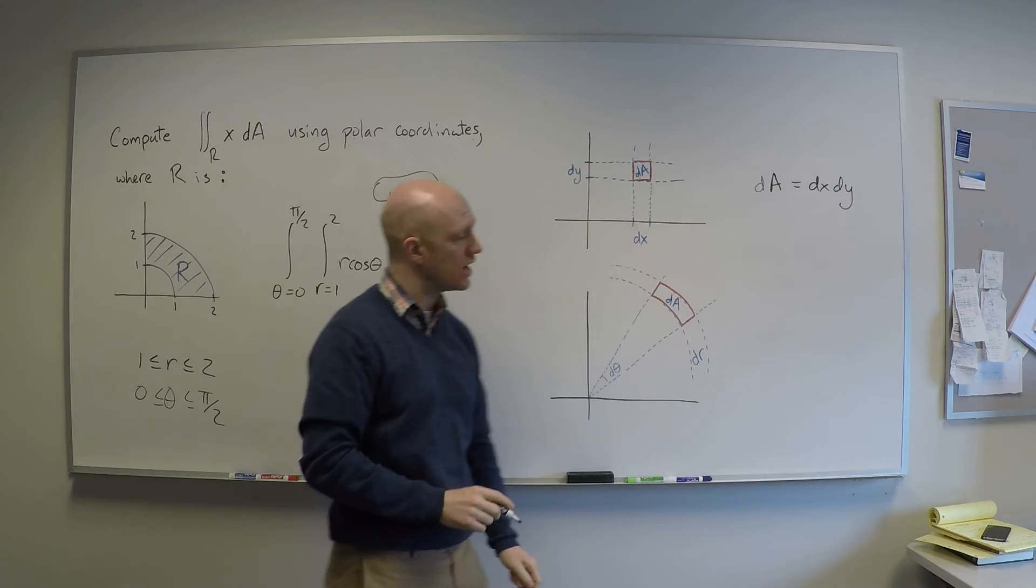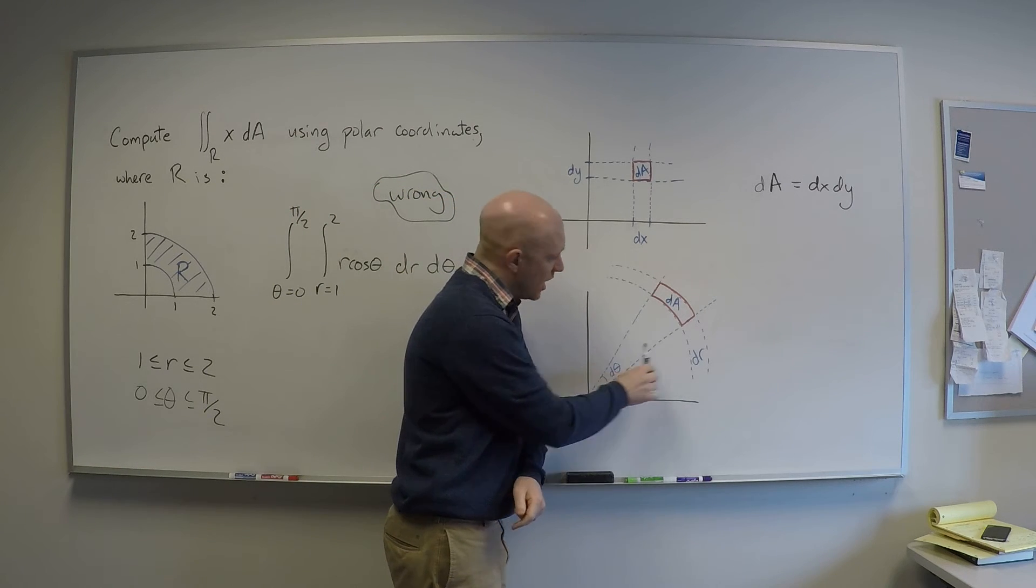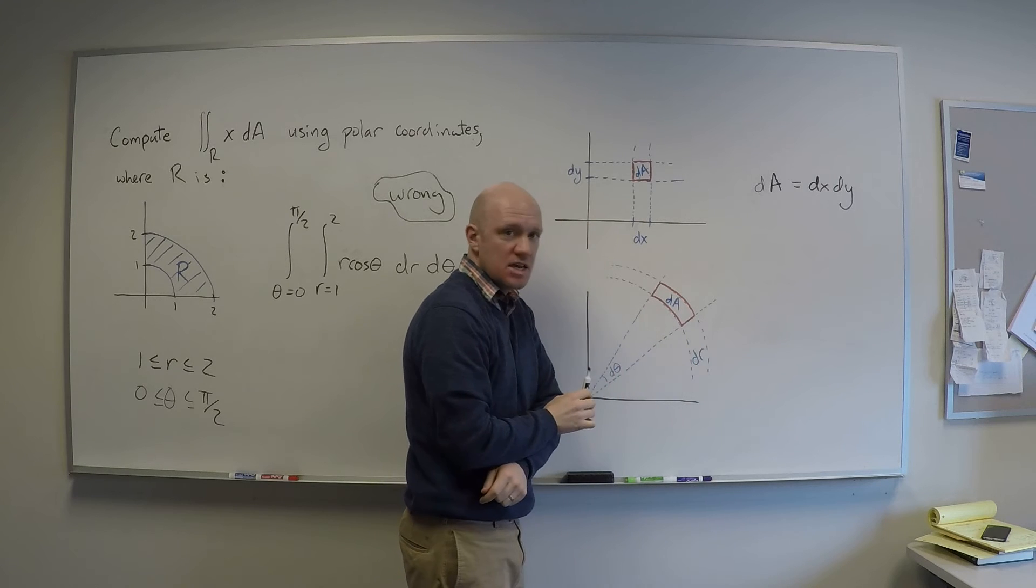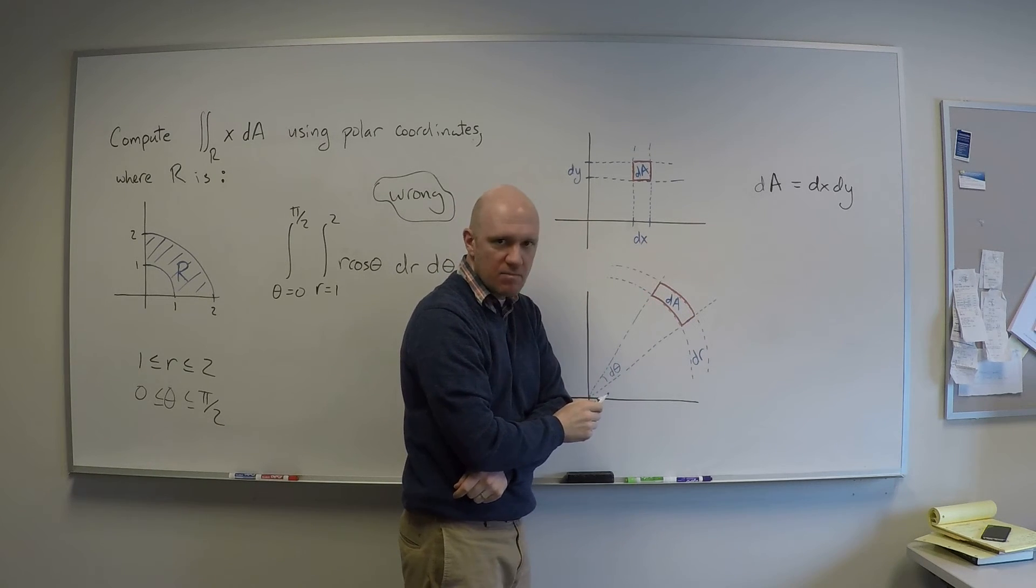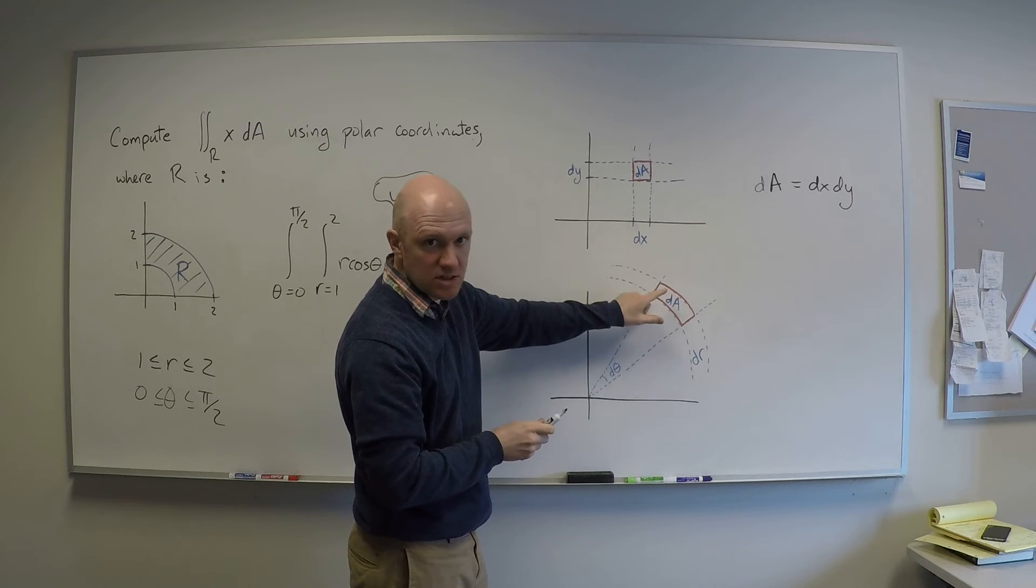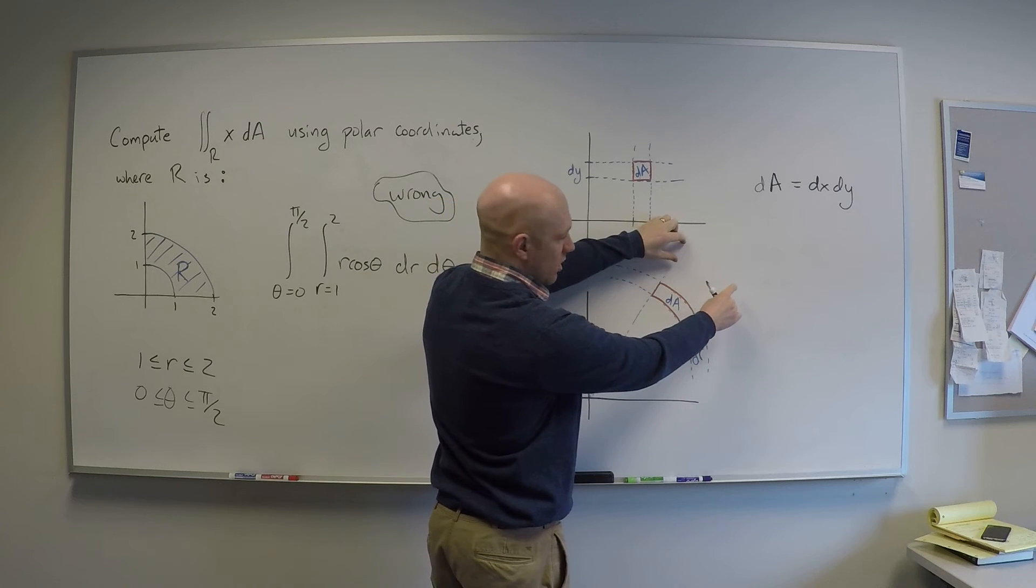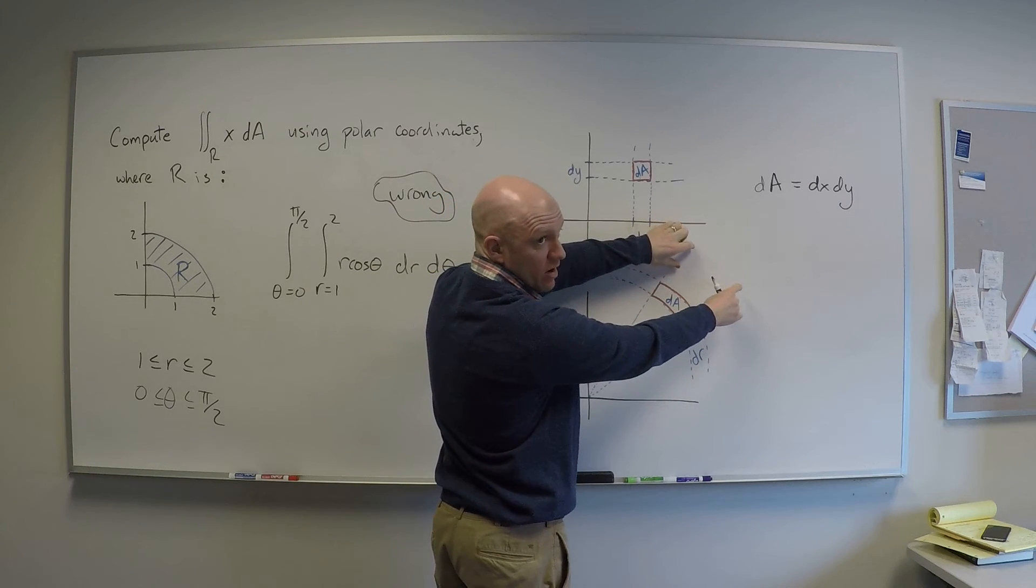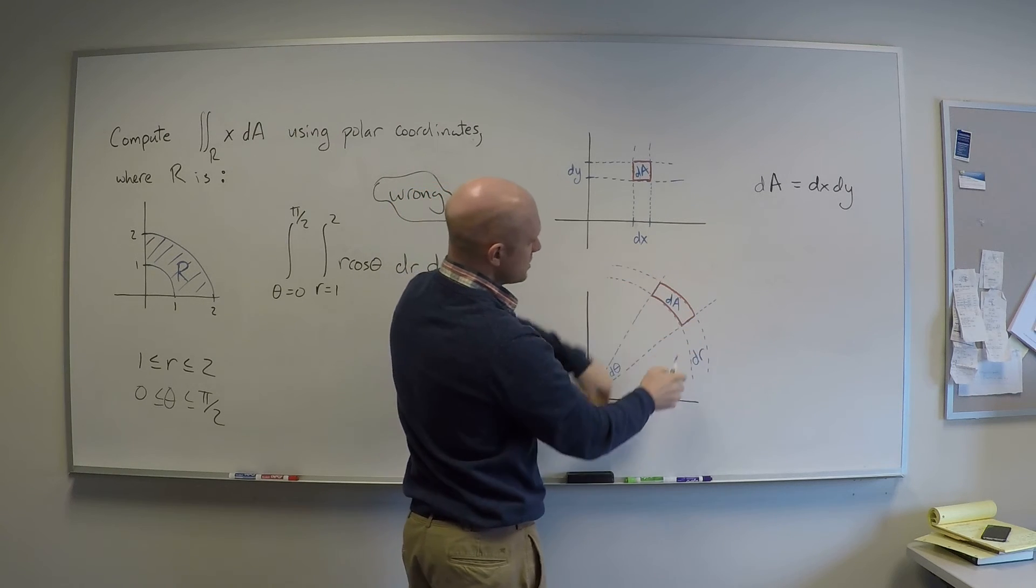On the other hand, when I wiggle theta a little bit and I wiggle r a little bit, I get again a little wiggle in the area dA. But this wiggle is a little different because it actually depends on the value of r. I get a bigger wiggle if r is big and a smaller wiggle if r is small. Let's figure out what this thing is.